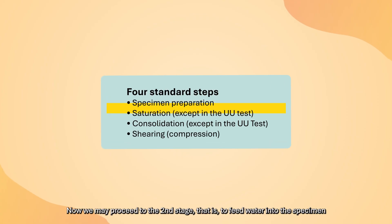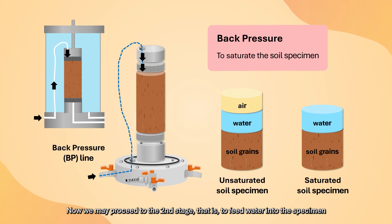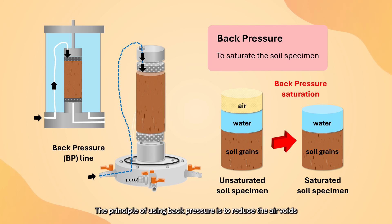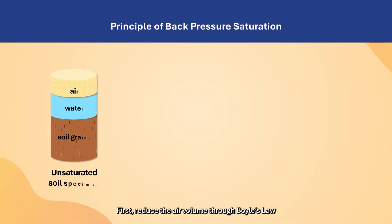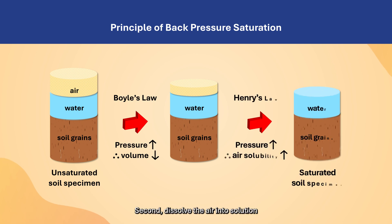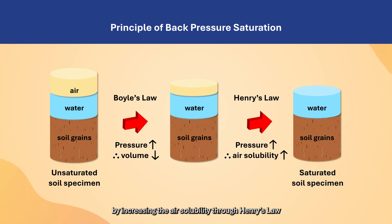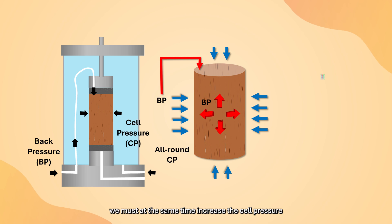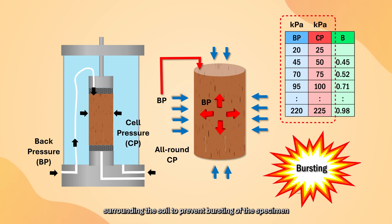We may now proceed to the second stage: feeding water into the specimen and saturating it by means of increasing the back pressure. The principle of using back pressure is to reduce the air voids within the soil by two physical processes — first, reducing the air volume through boiling the soil; second, dissolving the air into solution by increasing air solubility through Henry's Law. When we increase the back pressure to saturate the soil, we must simultaneously increase the cell pressure surrounding the soil to prevent bursting of the specimen.